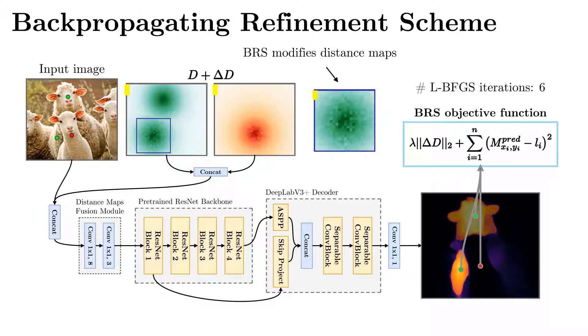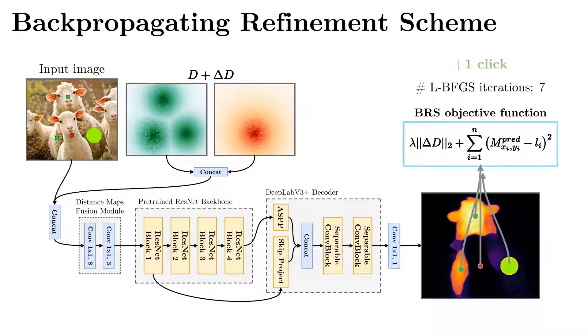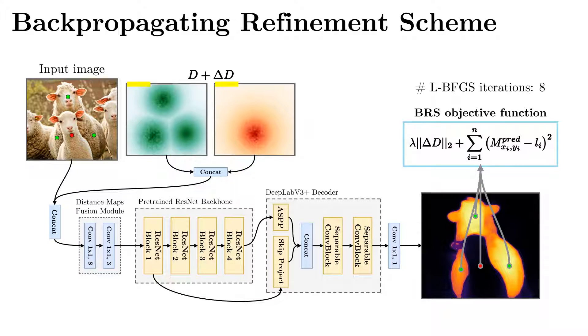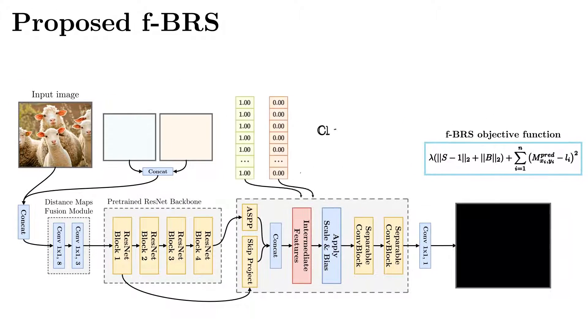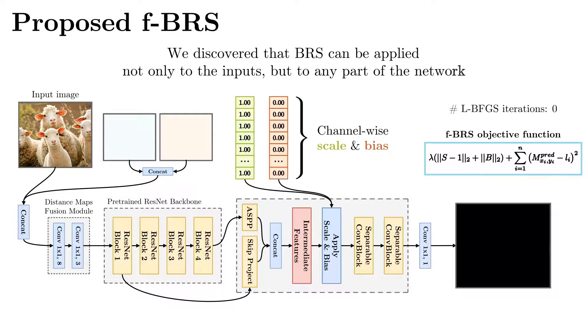The main drawback of BRS is high computational cost, since one optimization iteration requires backward paths through the whole network. We discovered that BRS can be applied not only to the inputs, but to any part of the network, allowing to reduce computational costs.